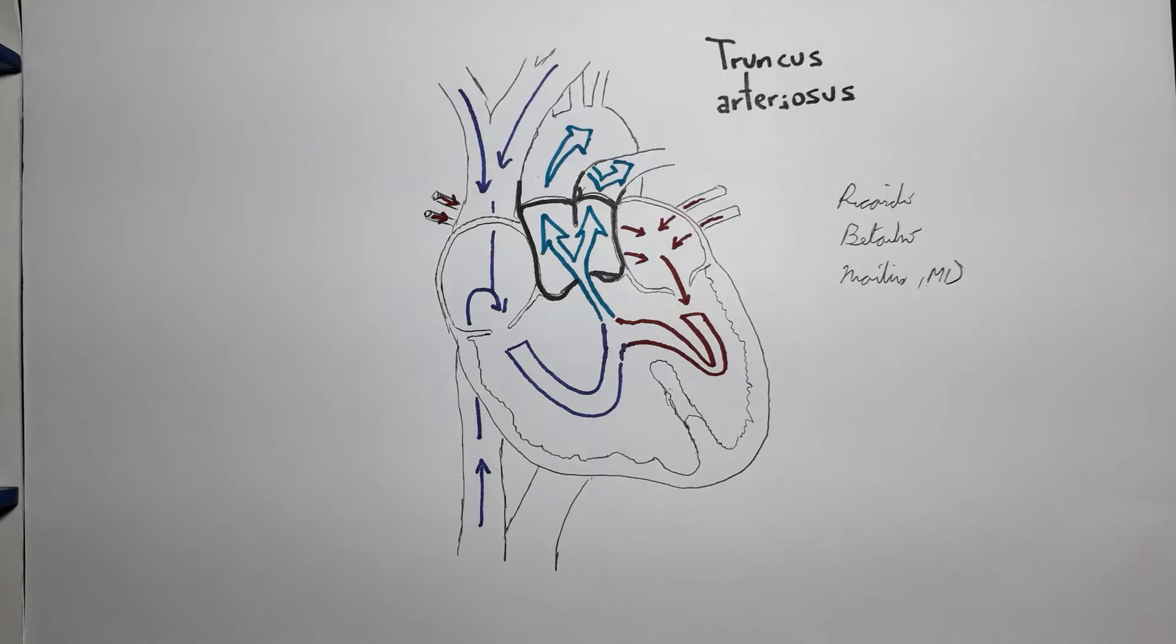Since both the aortic pulmonary septum and the continuous structure inferior to it, the membranous part of the interventricular septum, are of neurocrest origin, persistent truncus arteriosus will almost invariably be associated with a ventricular septal defect. If the neurocrest cells fail to form the aortic pulmonary septum to divide the truncus arteriosus, they are unlikely to have been successful in forming the membranous portion of the interventricular septum. Therefore, we will have only the muscular portion.